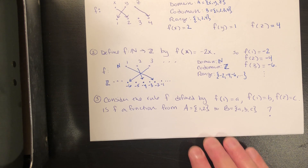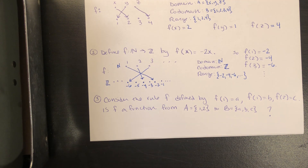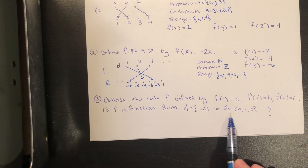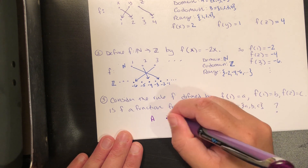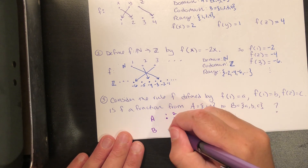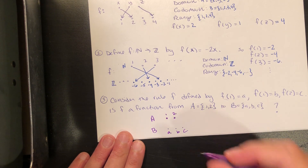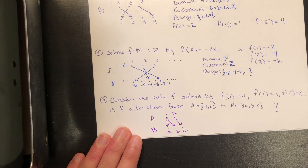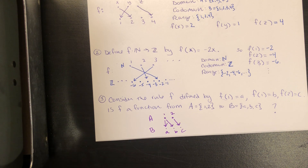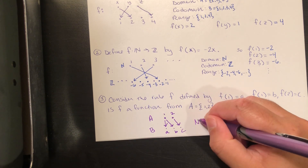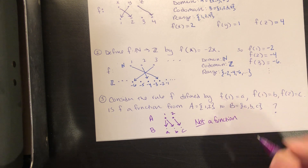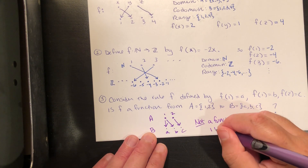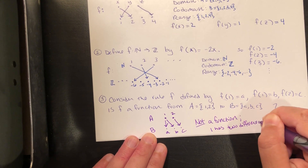Consider the rule F defined by F of 1 equal to A, F of 1 equal to B, and F of 2 equal to C. Is this going to be a function from the set containing 1 and 2 to the set containing A, B, and C? The diagram shows 1 getting mapped to A and also getting mapped to B, while 2 gets mapped to C. Is this a good rule? No, because where is 1 supposed to go — to A or to B? This isn't well defined, so it's not a function. Remember, each input needs to have exactly one output. Here, 1 has two different outputs, and that's not allowed.